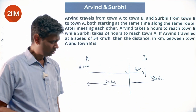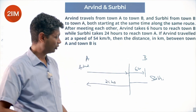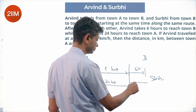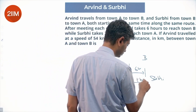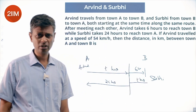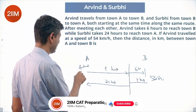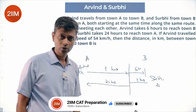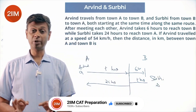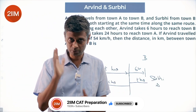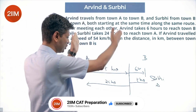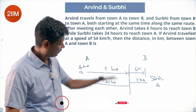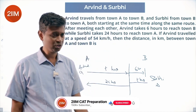The first thing to note is both of them take the same time to travel to the meeting point — some T hours. Let us say Arvind's speed is A and Surbhi's speed is S. To travel the first distance, the times taken are T and 24. To travel the second distance, times taken are 6 and T.